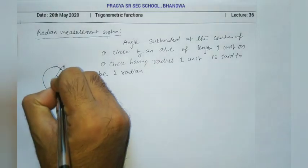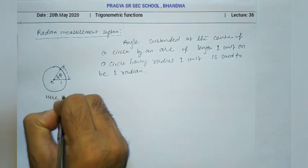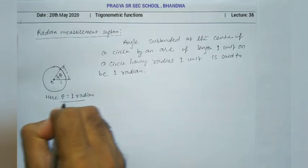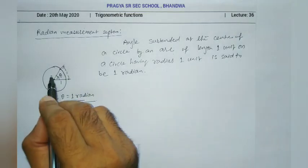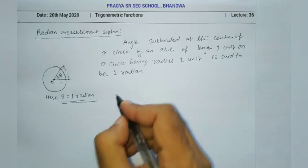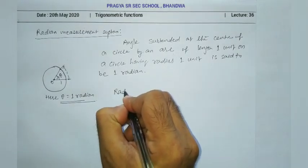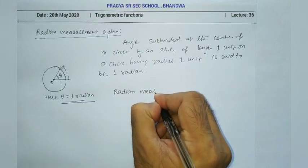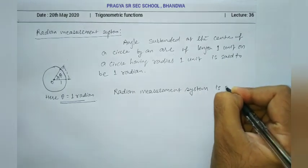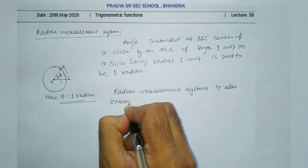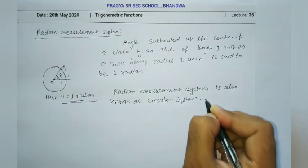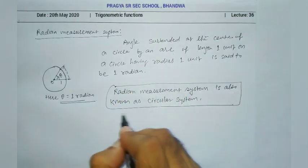So this angle is equal to 1 radian. This is a 1 radian angle. Because it is defined by a circle, the radian measurement system is called the circular measurement system.